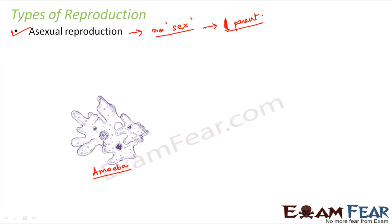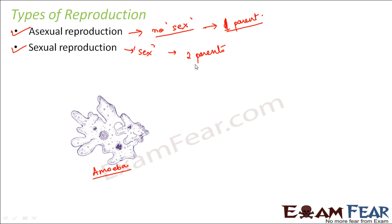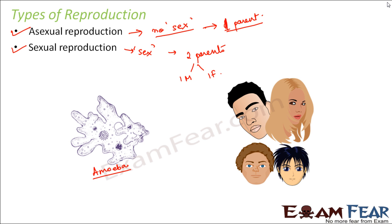The second type is sexual reproduction, where sex is involved. Here you have two parents — you actually need one male and one female, and only when these two fuse together do you get a new organism. The best example would be human beings: you need a father and a mother. Both of their cooperation is required for kids to be born.